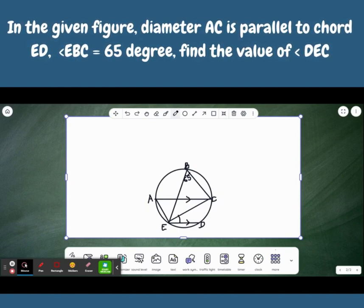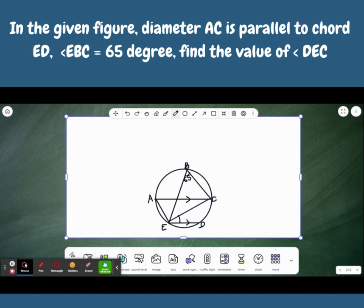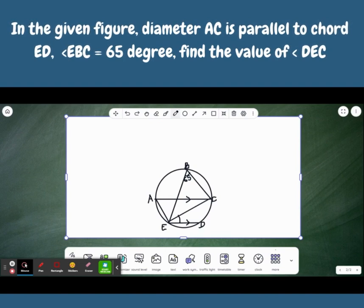Finally, we are going to solve a sum based on the properties of circles. In this figure, there is a circle with diameter AC parallel to the chord ED. I hope you can see the diameter AC which is parallel to the chord ED here. One angle CBE is given as 65 degrees.